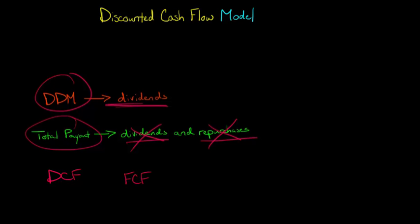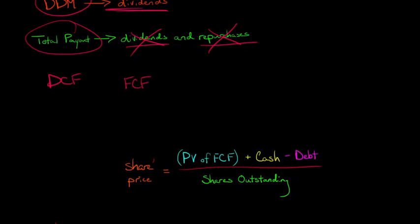So I just want to show you briefly the model. Our share price is going to be a function of the present value of free cash flow plus cash minus debt, and then we divide all of that by the number of shares outstanding.